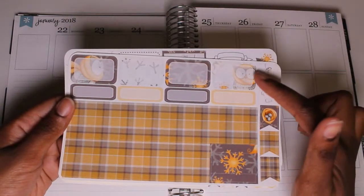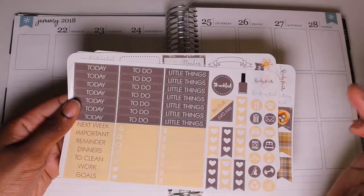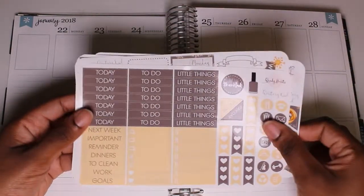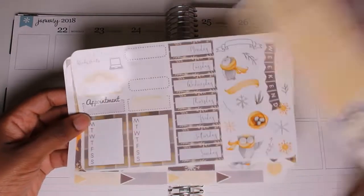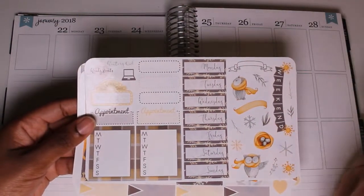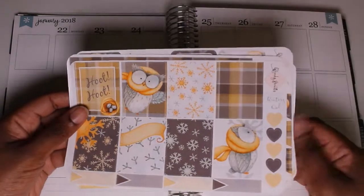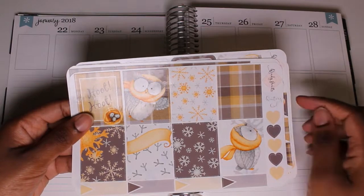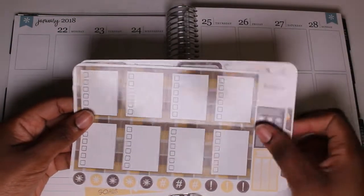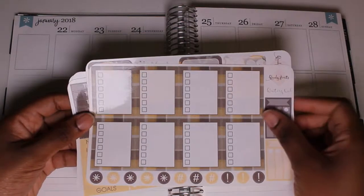This kit has bottom washi, boxes and flags, little things, headers and icons on this page. We've got some appointment labels, some date covers and some very cute deco, full boxes, check boxes and some more icons here at the bottom.